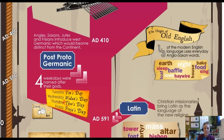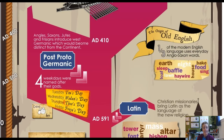These tribes came in, attacked, and conquered the British islands, bringing their own languages — early versions of Germanic languages. We can call this the beginning point of English. If you've heard the term Anglo-Saxon, that's where it comes from — the names of two of those tribes. The Jutes and Frisians don't get a callout, but Anglo-Saxon refers to English speakers and comes back to this point in history.